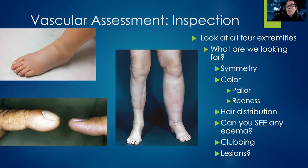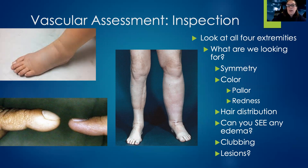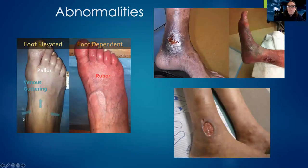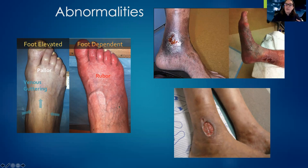For the vascular assessment, look at all four extremities. Check for symmetry — are they the same size and shape? Is the color the same? Always compare bilaterally. Pallor can indicate inadequate blood flow; redness may indicate a venous issue with blood pooling. Check hair distribution — missing hair on the legs can indicate poor blood flow. Look for edema, clubbing, or lesions. When someone has poor perfusion and elevates their legs, they may get a pale color. With a venous issue, when the legs are dependent, blood pools and the feet can turn red. Ulcers may also be present.